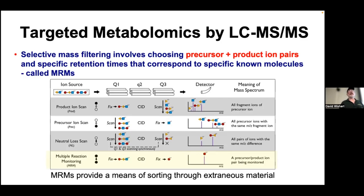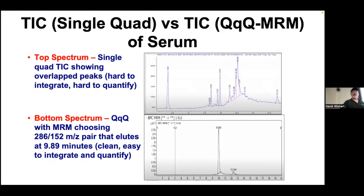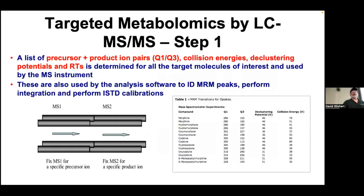Here's a total ion chromatogram from a single quad—pretty messy. If you've done QQQ MRM and chosen just a 286/157 pair at 9.89 minutes, it simplifies to just one peak that you can integrate easily—and that one peak is what allows you to identify and quantify. You need a list of precursor and product ion pairs with their collision energies, declustering potentials, and retention times. If your kit has 140 standard metabolites, you need to determine that for 140 metabolites; if 640, then for 640 metabolites.